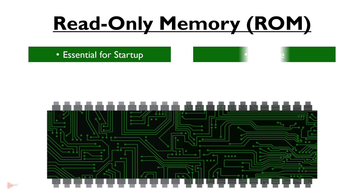Examples of ROM: Common examples include the BIOS, or basic input-output system, which is responsible for starting the computer and performing initial hardware checks, and firmware, which provides low-level instructions for specific devices like printers.